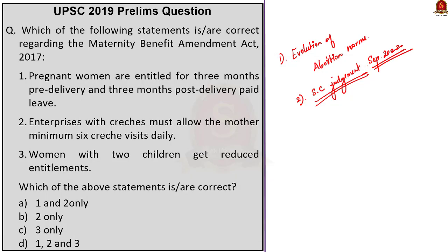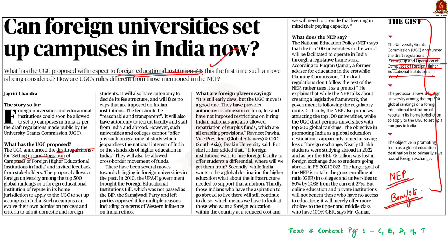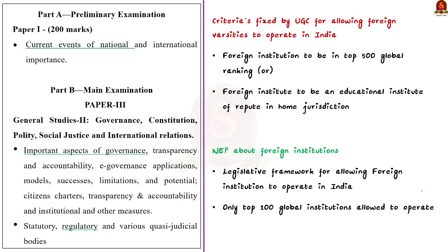Now, this text-in-context article talks about new changes brought forward by the University Grants Commission regarding foreign higher educational institutions. The UGC has allowed foreign universities to operate within the borders of India by easing out the regulations. In this context, let us learn about the new draft regulations released by UGC, the National Education Policy's stand on this, and the benefits of allowing foreign educational institutions to operate in India.